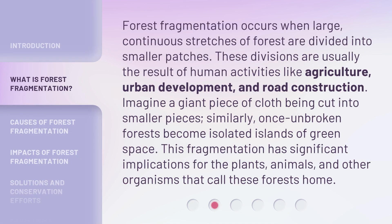Forest fragmentation occurs when large, continuous stretches of forest are divided into smaller patches. These divisions are usually the result of human activities like agriculture, urban development, and road construction. Imagine a giant piece of cloth being cut into smaller pieces. Similarly, once unbroken forests become isolated islands of green space.